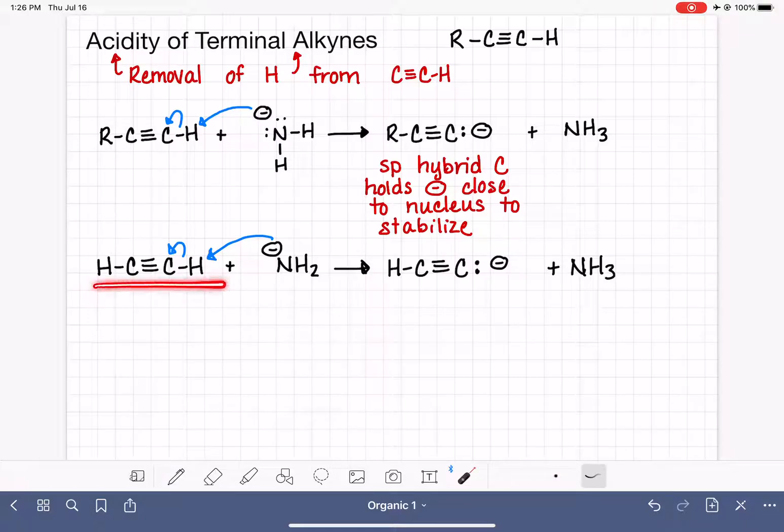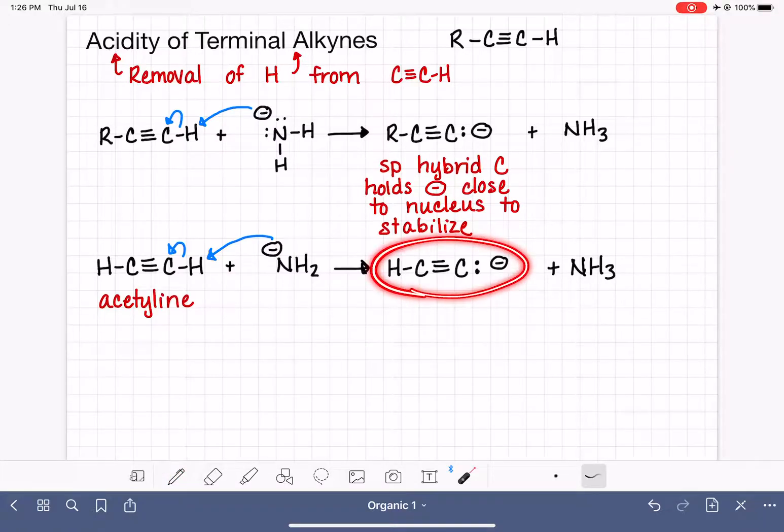This alkyne that we started with, its IUPAC name is ethyne, as I said. But its common name is acetylene. And the product of this reaction is called the acetylid or acetylide ion.